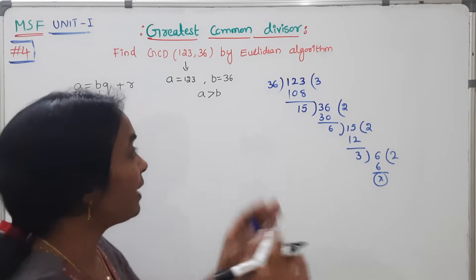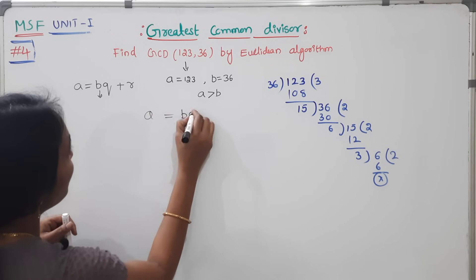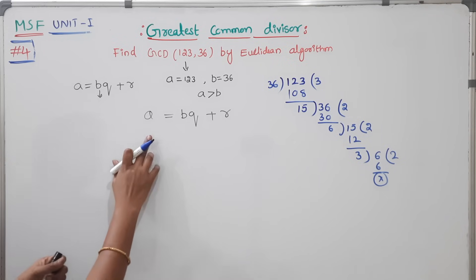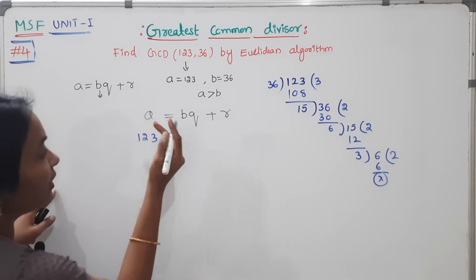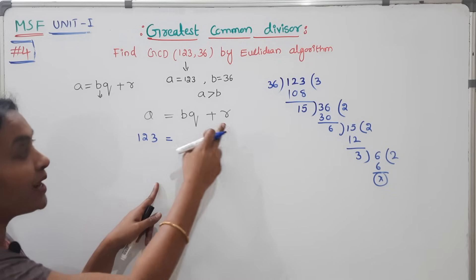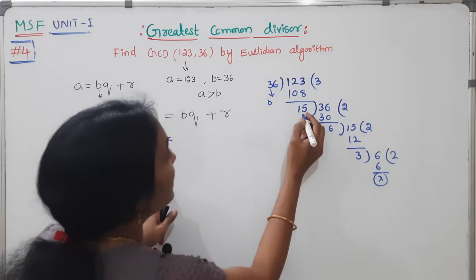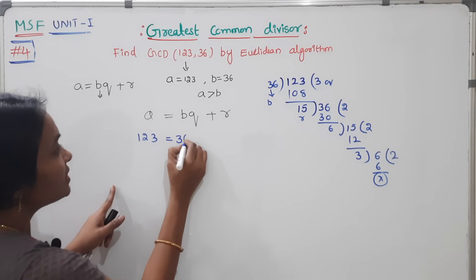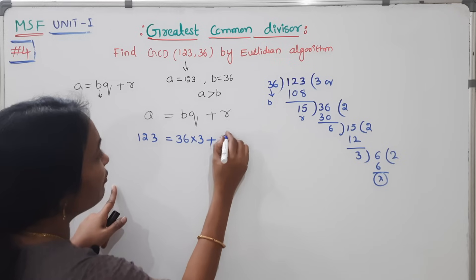This is the normal division form. The tabular formula is A equals BQ plus R. What is our A here? A is equal to 123. B is nothing but the divisor, Q is nothing but the quotient, R is the remainder. So B is 36, into Q which is 3, plus remainder 15.